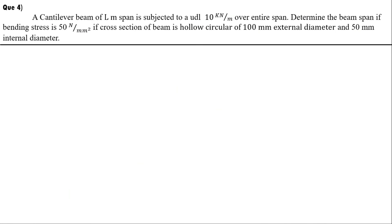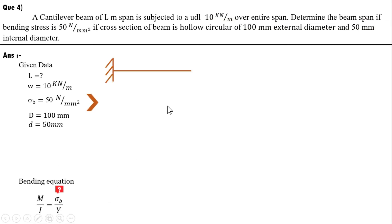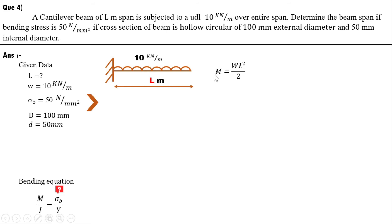Problem 4: a cantilever beam with a hollow circular cross section of outer diameter 100 mm and inner diameter 50 mm carries a UDL of 10 kN/m. We need to determine the beam span. For maximum bending moment of a cantilever with UDL, M = WL²/2. With W = 10 and L unknown, M = 5L² kN·m.